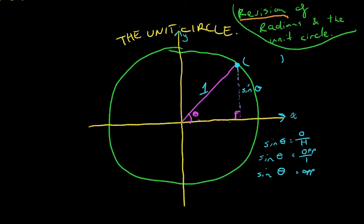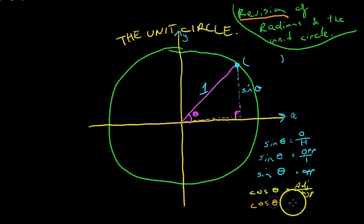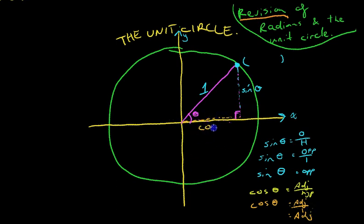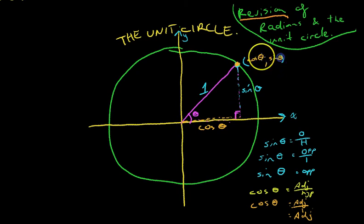Now you can do the same thing with cos theta. Cos theta is equal to adjacent over hypotenuse. This is the adjacent right here, and the hypotenuse is there. That means that cos theta equals adjacent over 1, which is just the adjacent. That means this length here is equal to cos theta. So we can say that this point has an x value of cos theta and a y value of sine theta.